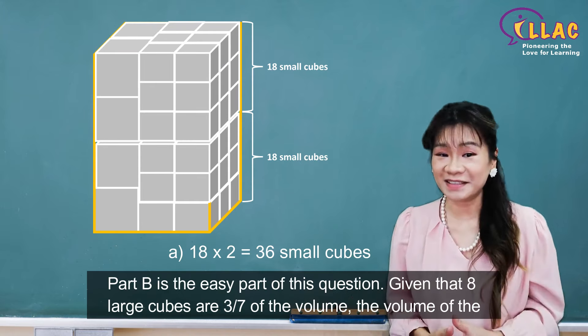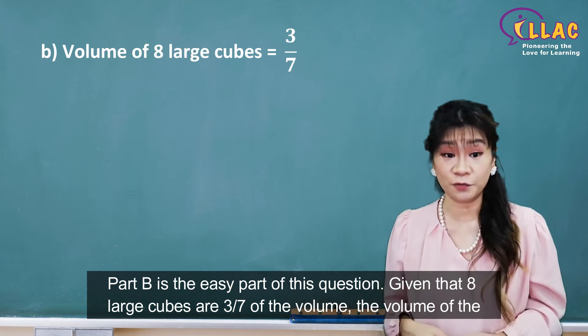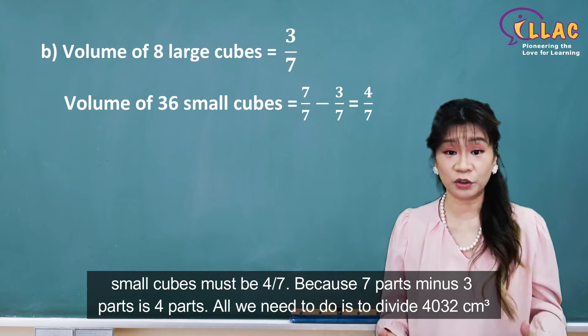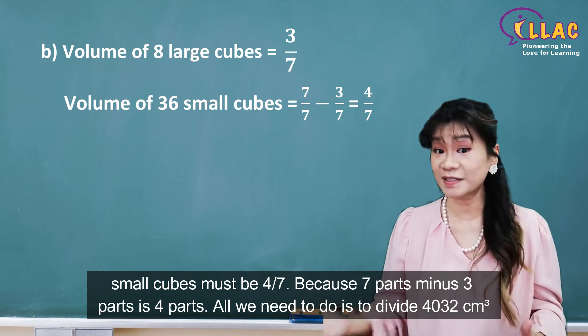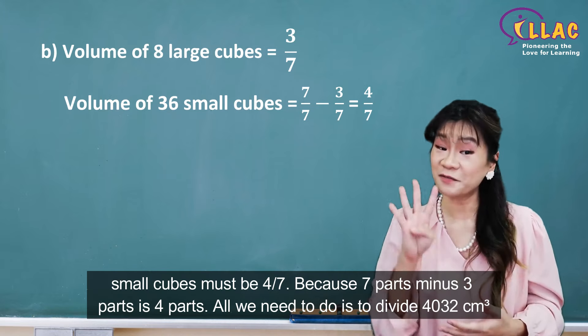Part B is the easy part of this question. Given that 8 large cubes are 3 over 7 of the volume, the volume of the small cubes must be 4 over 7, because 7 parts minus 3 parts is 4 parts.